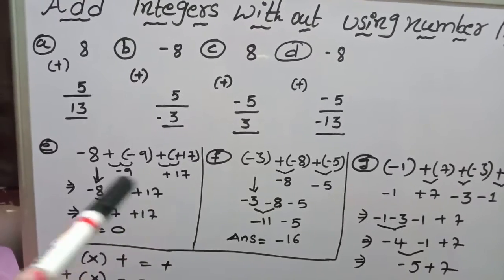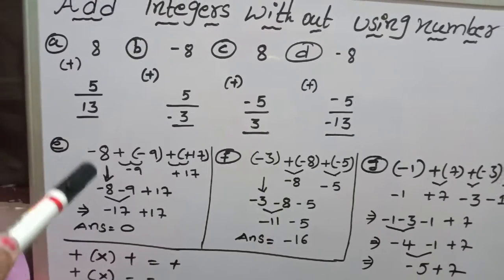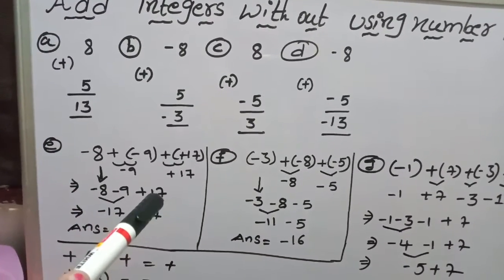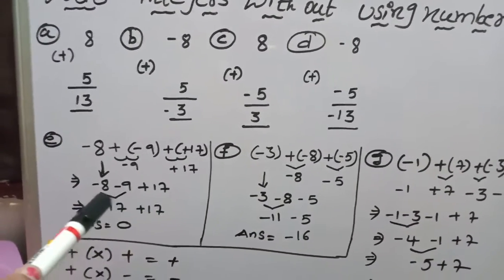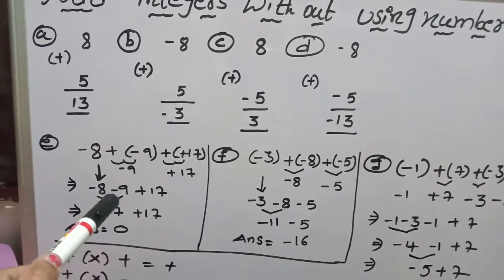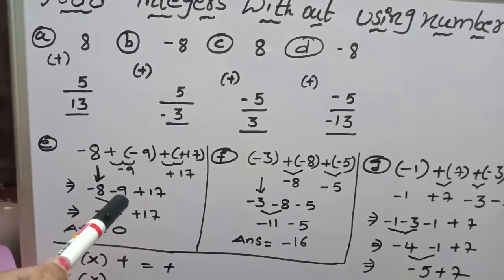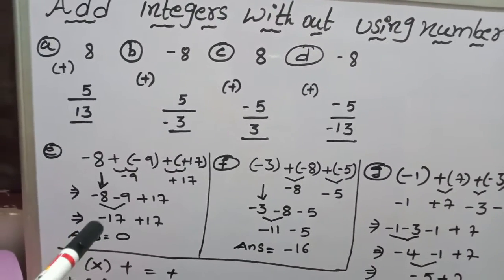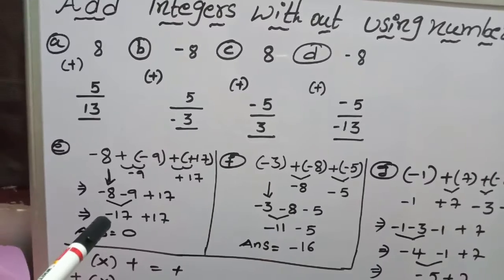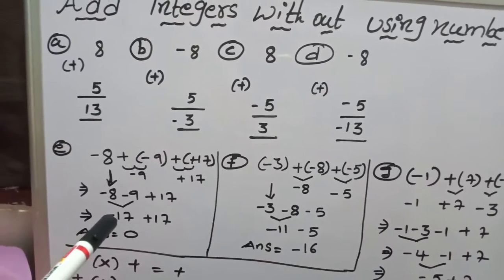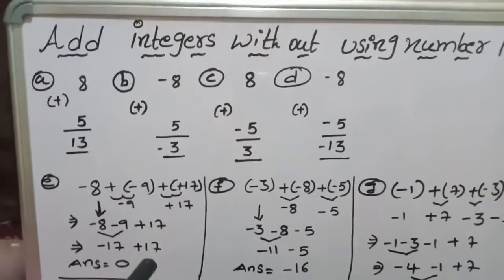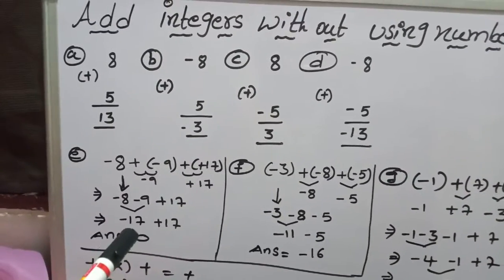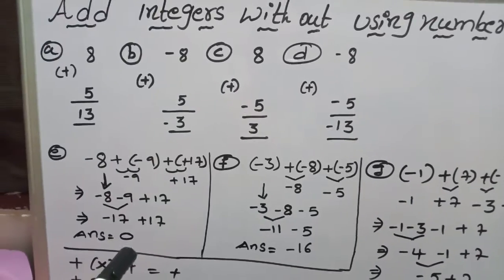So I write down minus 8 minus 9 plus 17. First I add these 2 negative numbers: 8 plus 9 means 17, and both are negative, so give symbol as negative — giving minus 17. Then minus 17 plus 17: if you subtract plus 17 from minus 17, you get the answer 0.